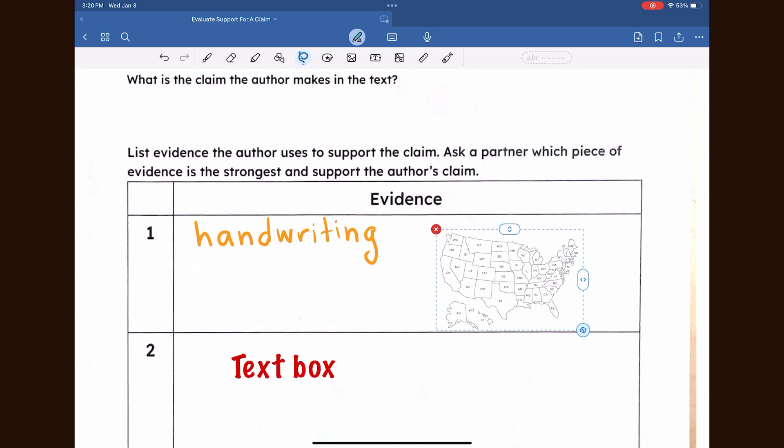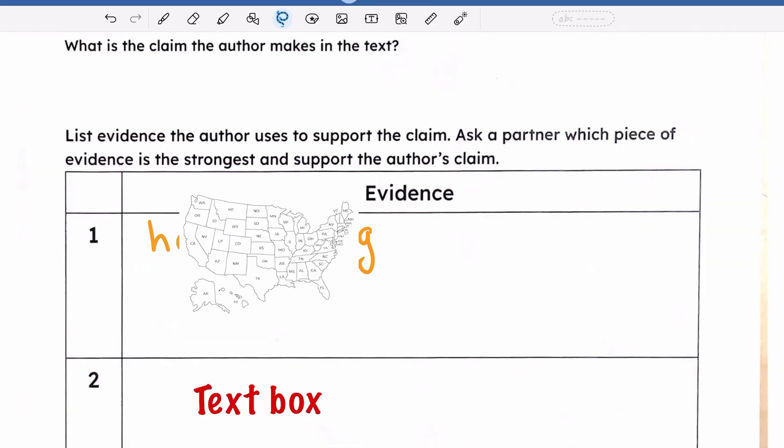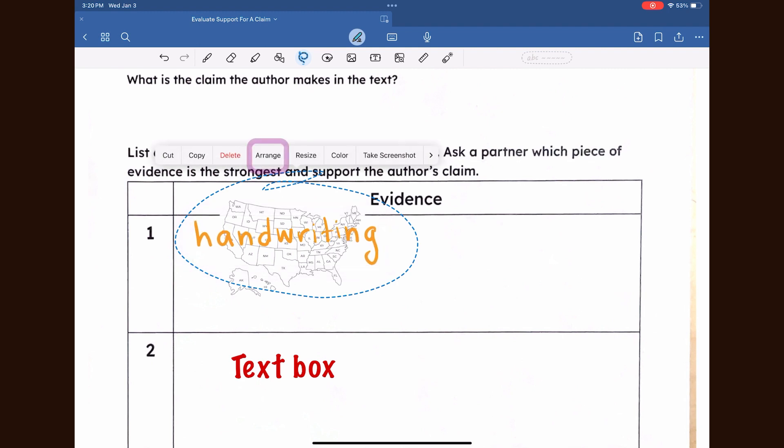Other options include take a screenshot, change pen and highlighter stroke color, or delete selected items. You can also select a range to change the order of items in your document, bringing selected items to the front or sending them to the back.